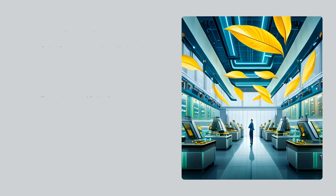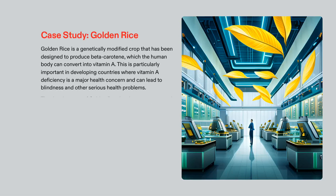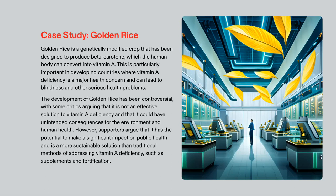Golden rice is an example of genetic engineering designed to produce beta-carotene to address vitamin A deficiency in developing countries. Developing golden rice has been controversial, with some arguing it may have unintended consequences. However, it has been proposed as a more sustainable solution than traditional methods, such as supplements and fortification, for addressing vitamin A deficiency.